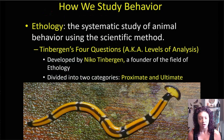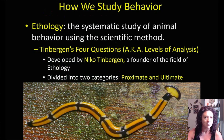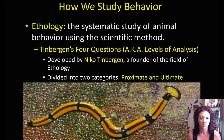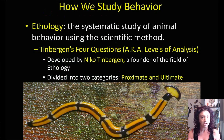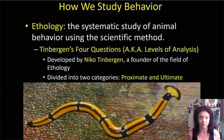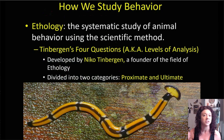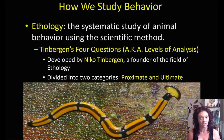Tinbergen's four questions are questions we ask ourselves when examining the behavior of an animal to try to structure our understanding of why that behavior exists and why the animal is exhibiting it right then under those circumstances. There are two categories of questions: proximate questions, which are more immediate and have to do with why the animal is doing that thing right now under these circumstances, and ultimate questions, which ask why that behavior evolved in the first place, how it developed over evolutionary time, and how it has persisted in that group of animals up until this point.